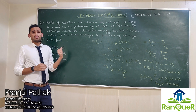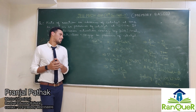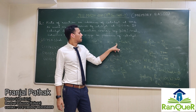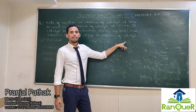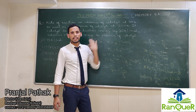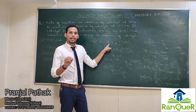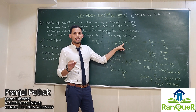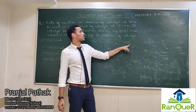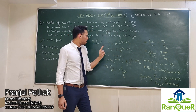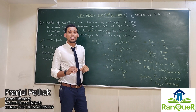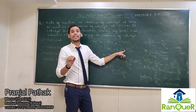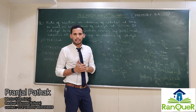To solve this question we'll use the Arrhenius equation, which says rate constant K equals Arrhenius factor A multiplied by e raised to the power of minus Ea divided by RT. Here K is the rate constant in absence of catalyst, Ea is the activation energy in absence of catalyst, and T1 is 700 Kelvin. On the other hand, Kc is the rate constant in presence of catalyst, Eac is the activation energy in presence of catalyst, and T2 is 500 Kelvin.